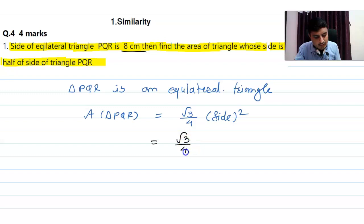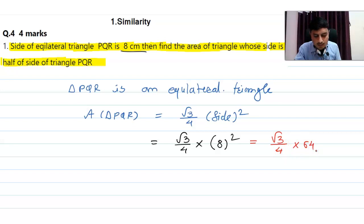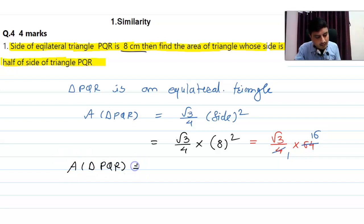The side is 8 cm, so area of triangle PQR = (√3 / 4) × 8² = (√3 / 4) × 64 = 16√3 square centimeters.